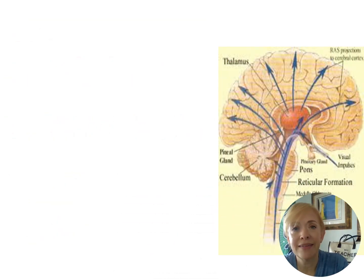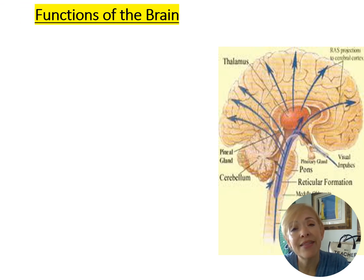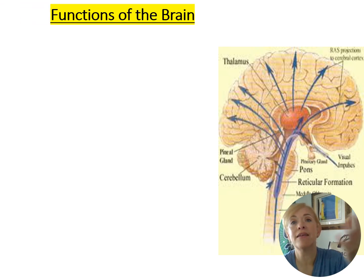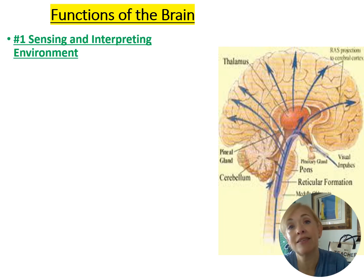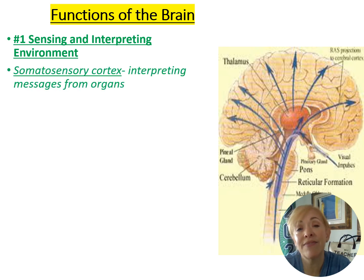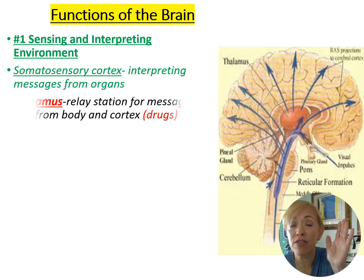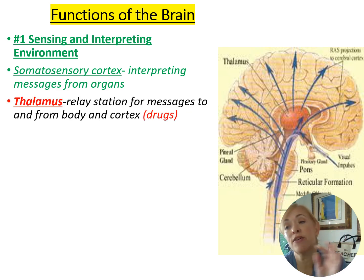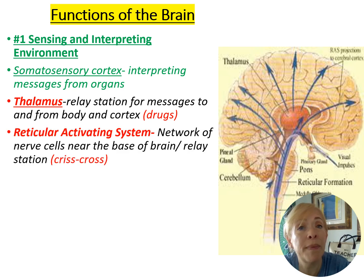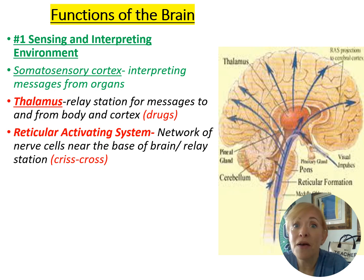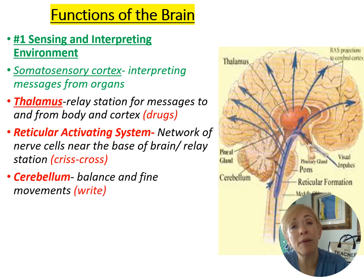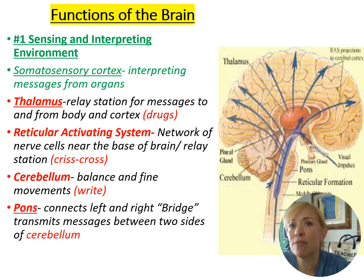The thalamus is your relay station — everything coming in from the environment passes through the thalamus and gets sent to the appropriate area of the cortex. The reticular activating system crisscrosses information between hemispheres. The cerebellum controls balance and fine motor coordination — for example, writing requires the cerebellum, and it helps you stand or sit without falling over.